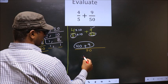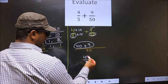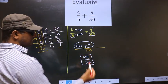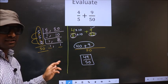Now 40 plus 9 is 49 by 50. We cannot simplify this fraction. So this is our answer. Am I clear?